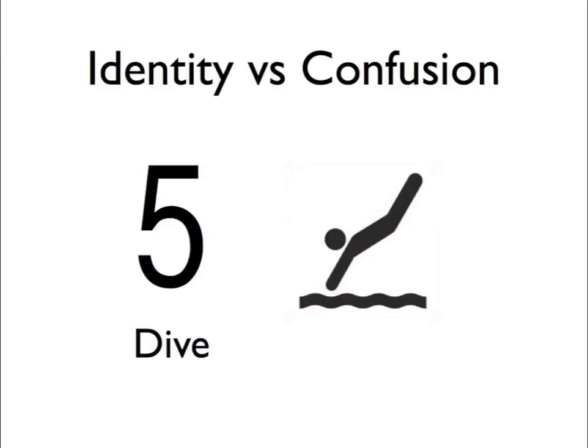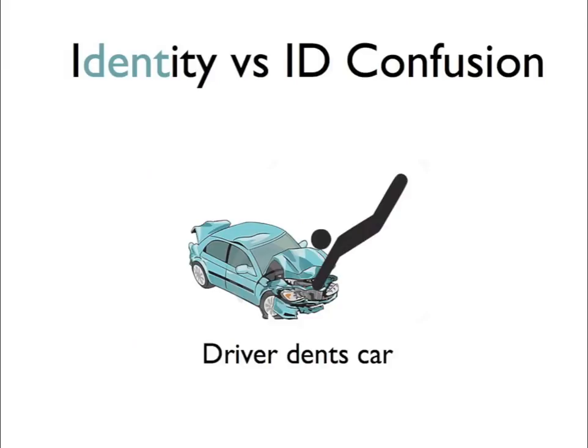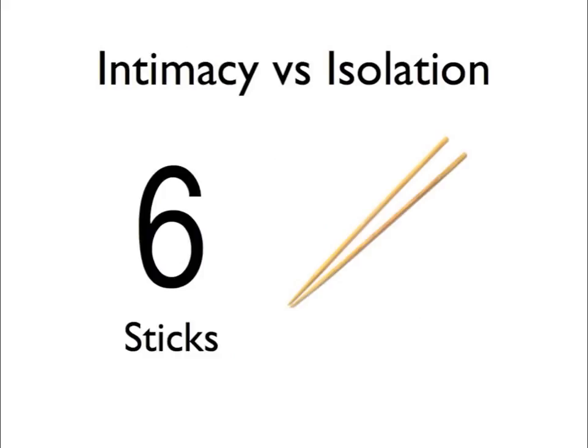Number five is identity versus identity confusion. Now number five is a diver. So we need something to attach to the word dive that's going to help bring the word identity up. Picture the diver diving into a car and denting it. We also have identity confusion, so we can use the same image for both.